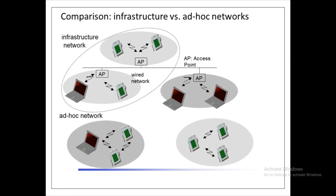Infrastructure networks not only provide access to other networks but also include forwarding functions, medium access control, and more. In infrastructure-based wireless networks, communication typically takes place only between the wireless nodes and the access points, but not directly between the wireless nodes themselves.